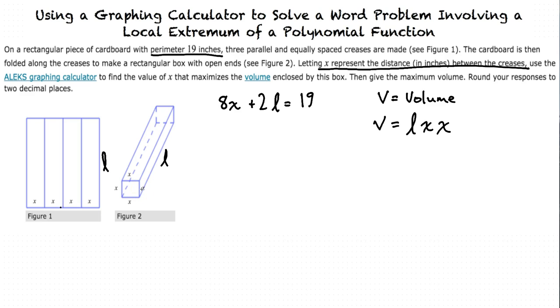In order to get a function that we can graph in the graphing calculator, we need to have only v and x, or v as a function of x. We need to get rid of the l. How can we do that?